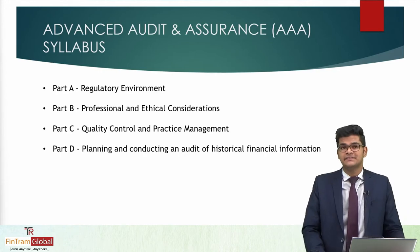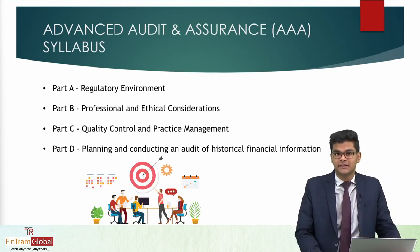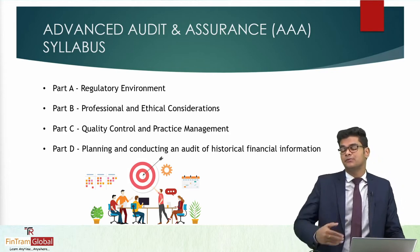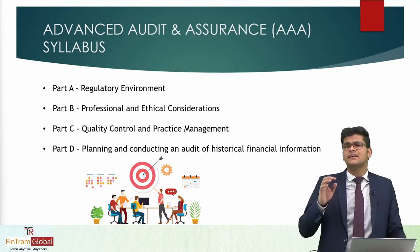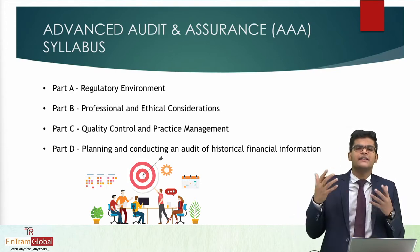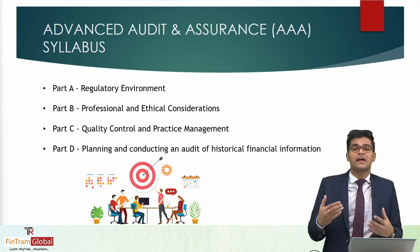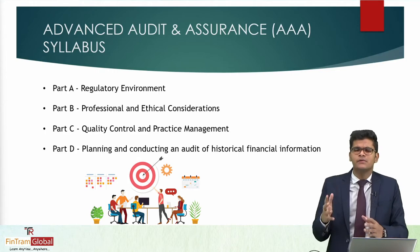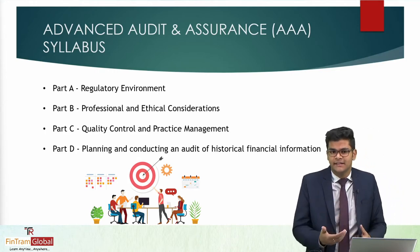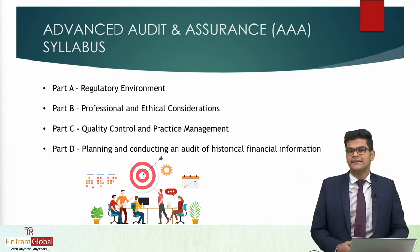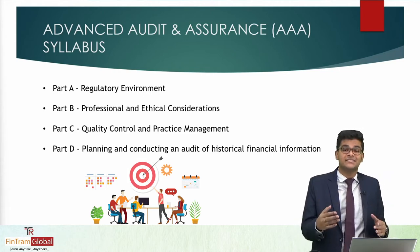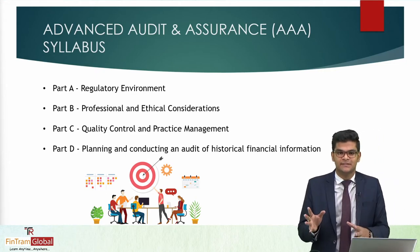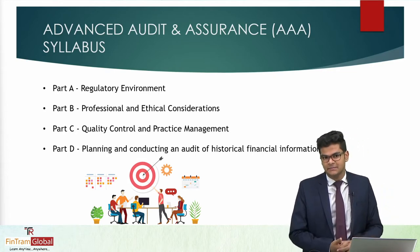Then you have Part D of the syllabus: planning and conducting an audit of historical financial information, which is basically all about the audit process itself — how exactly the audit is conducted, what needs to be planned, what should be implemented, etc. Unlike the Audit and Assurance paper where we primarily looked at the audit process, in the Advanced Audit and Assurance paper we will also learn some new and advanced auditing standards. Other than that, we will also look at some other types of assurance engagements, since statutory audit is not the only service that an audit firm provides. There are also review services, and we will be looking at those within this syllabus area as well.